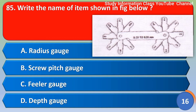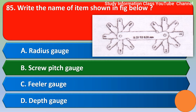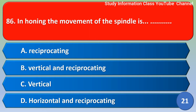Next question: Write the name of the item shown in the figure below — option A: radius gauge, option B: screw pitch gauge, option C: feeler gauge, option D: depth gauge. The correct answer is option B, screw pitch gauge.